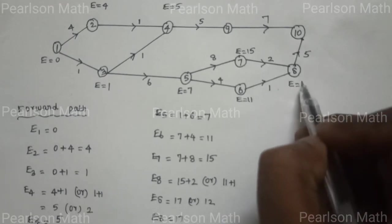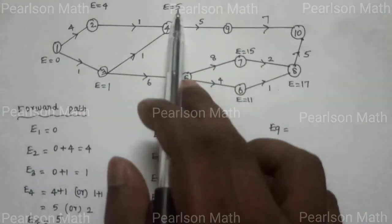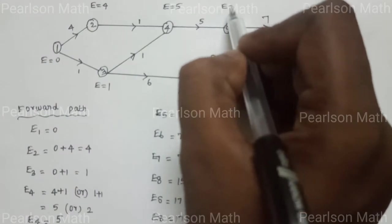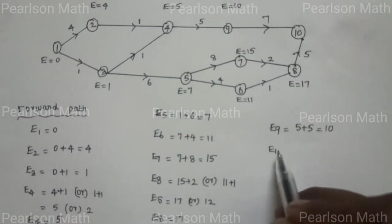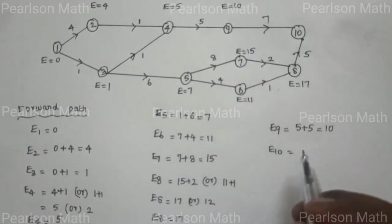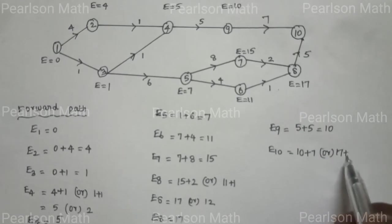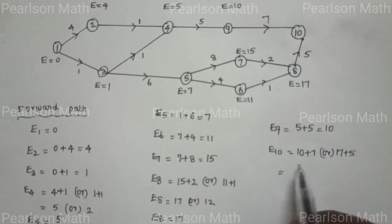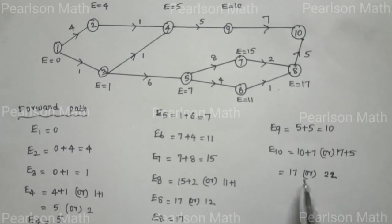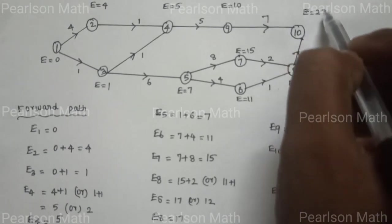E8 is 17. Next, E9: path 4 to 9 gives 5 plus 5 equal to 10. E10: path 9 to 10 gives 10 plus 7 equal to 17, and path 8 to 10 gives 17 plus 5 equal to 22. The maximum number is 22, so E10 is equal to 22.